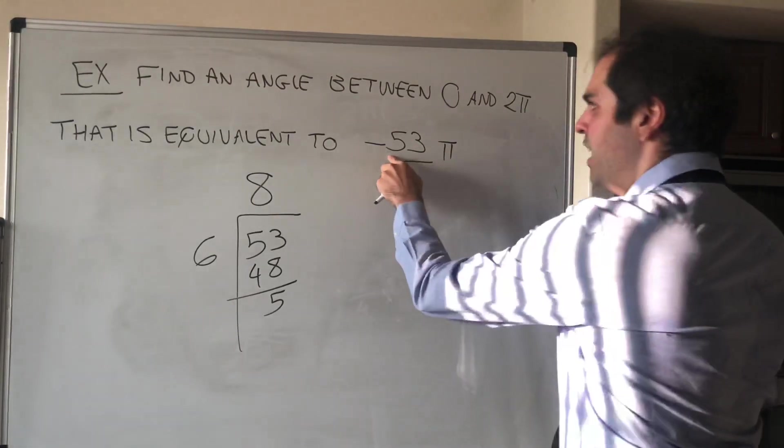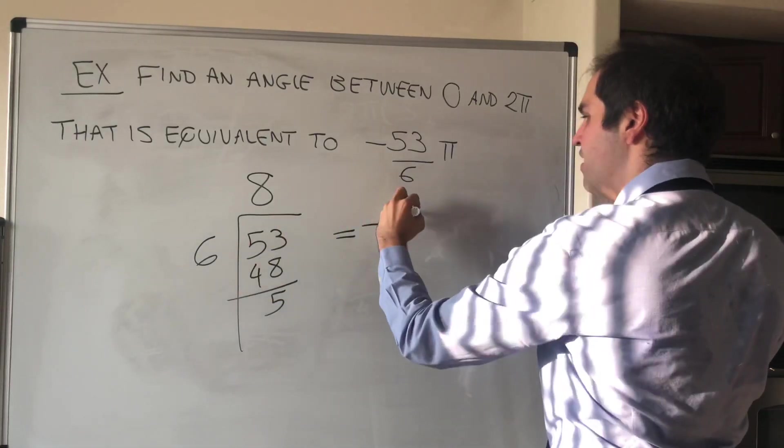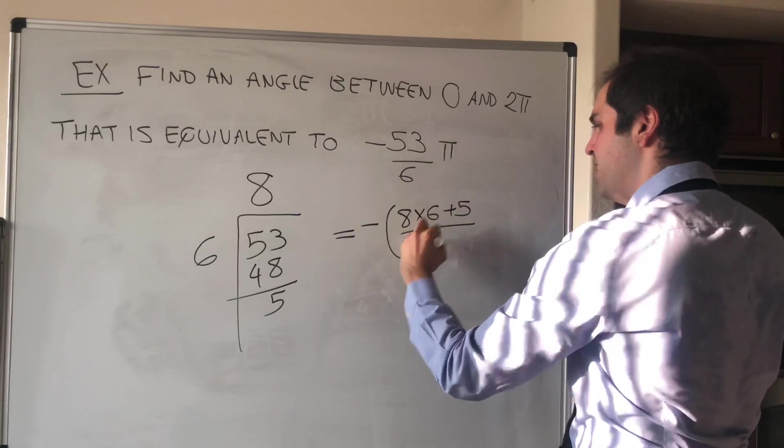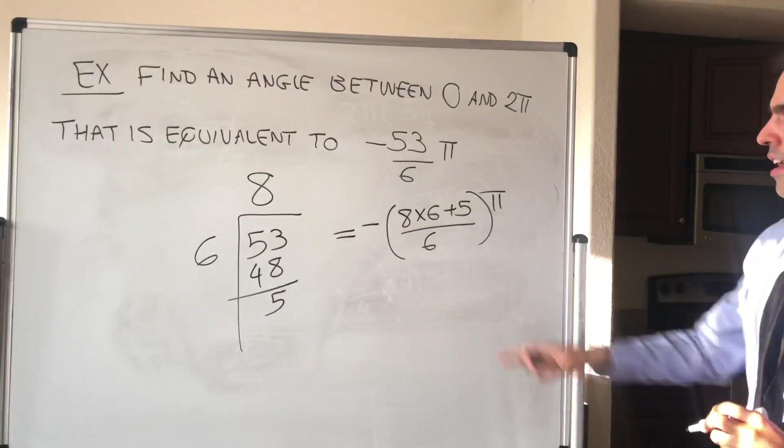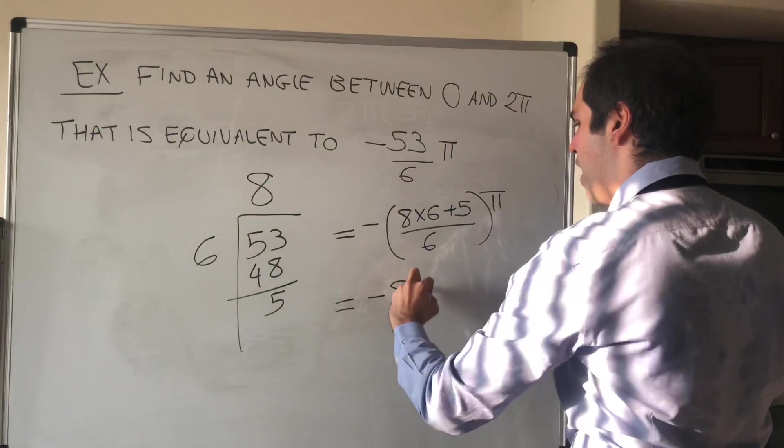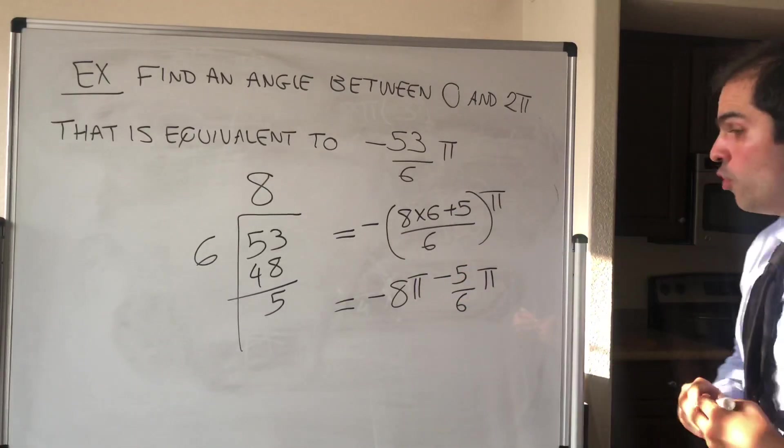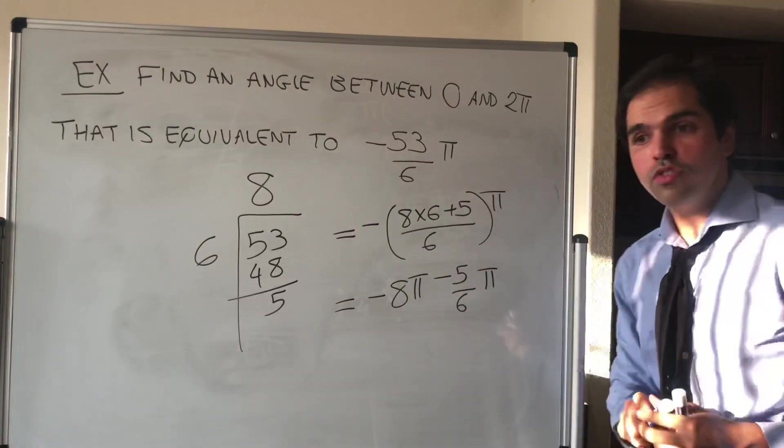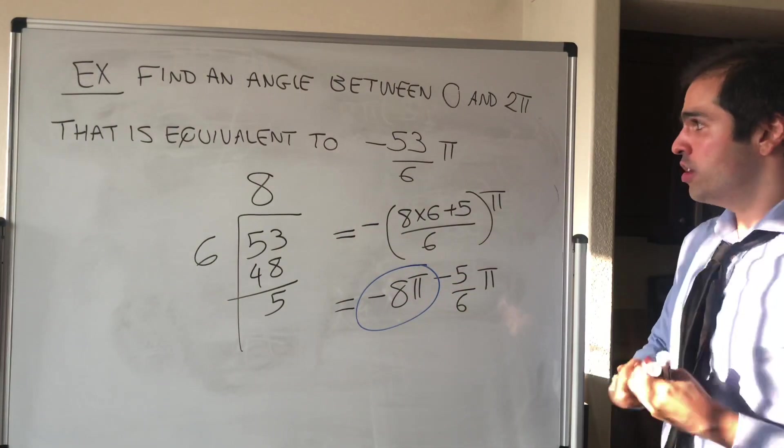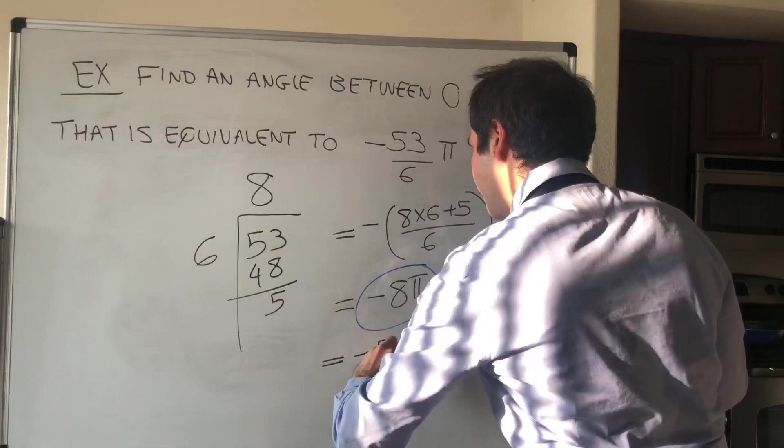So what does that tell you? It tells you that -53π/6, that is -(8×6 + 5)/6, again times π. And then this becomes the same thing as -8π - 5π/6. But remember, multiples of 2π don't matter. They give you the same radian measure. So really, this angle is the same thing as the angle -5π/6.